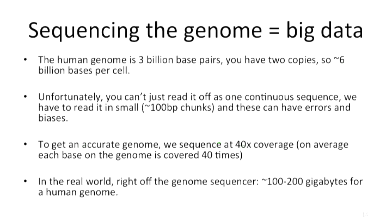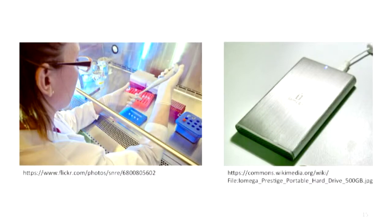We said three billion, but that's actually an underestimate — you've got two copies, so you're up to six billion. Because we're only reading tiny chunks at a time and those chunks can contain errors, and there's a whole bunch of biases around sampling from different parts of the genome, we often have to sequence a person about 40 times on average to get a really accurate idea of their genomic sequence. So the size of the data coming off these machines is in the order of 100 gigabytes. This is where the training comes in — imagine you're a biologist and your supervisor hands you a hard drive full of human genomes and says, could you please analyze these?